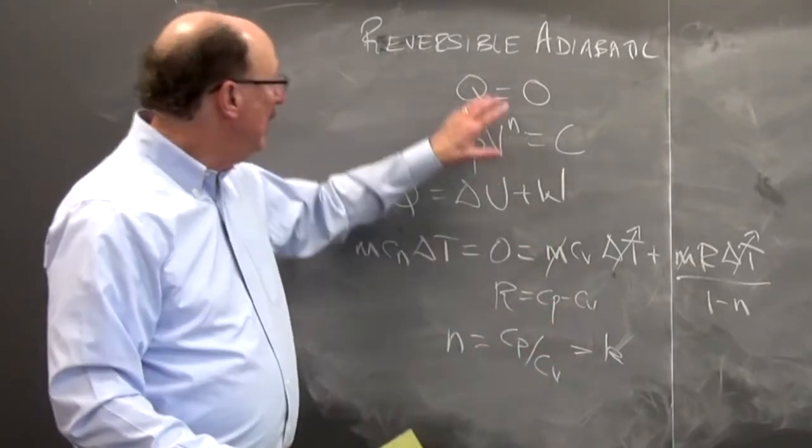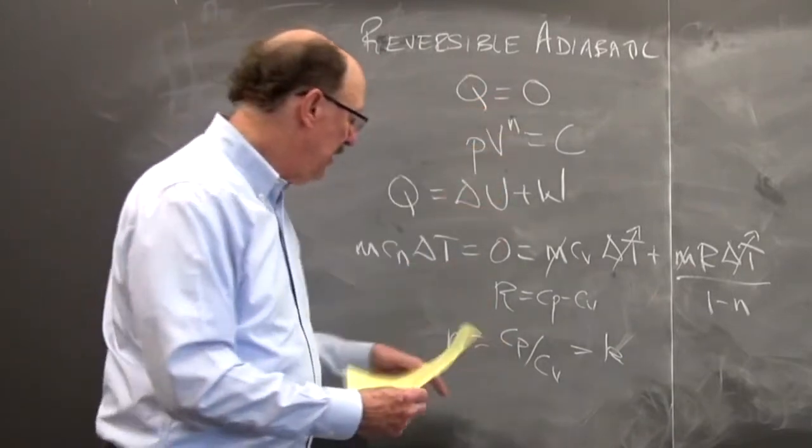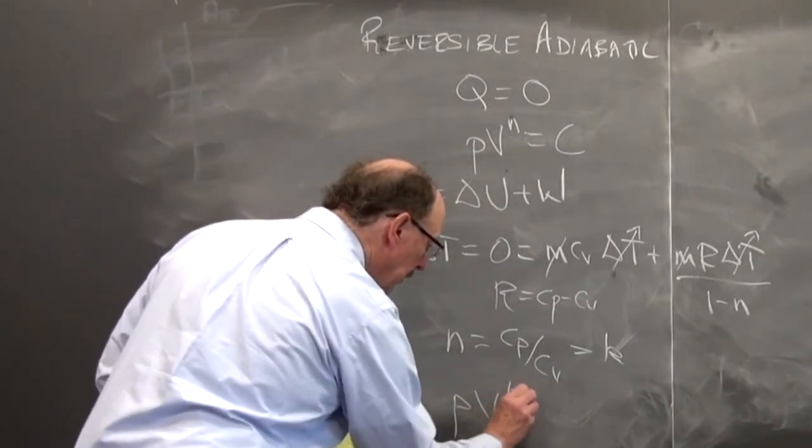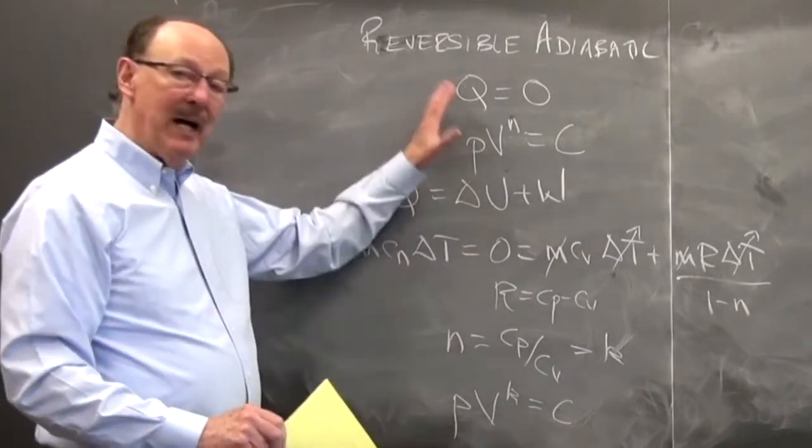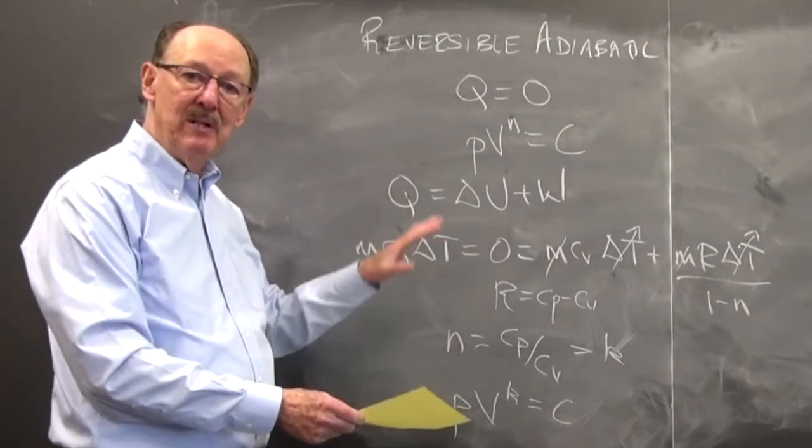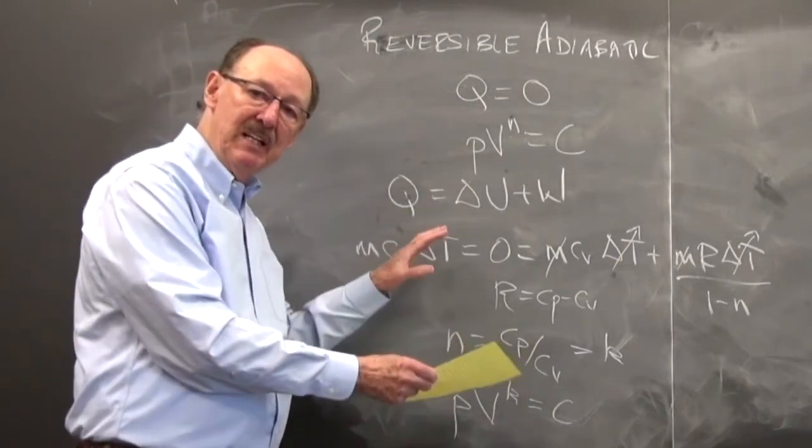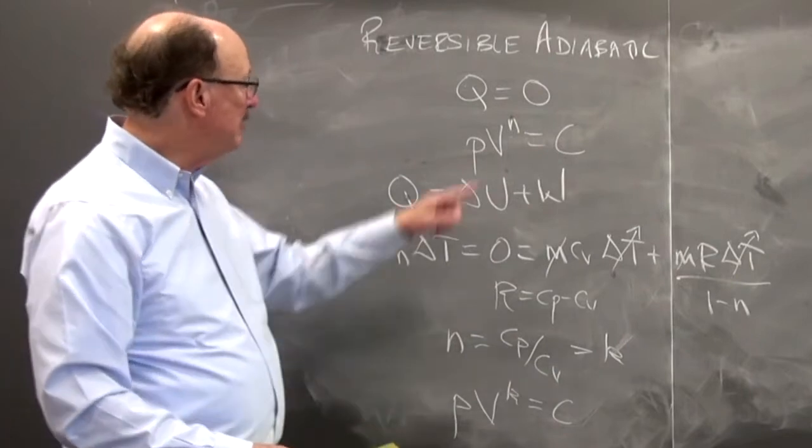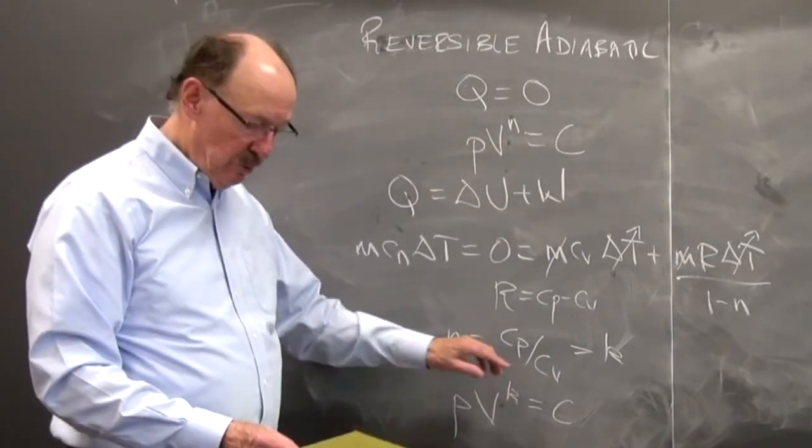And so now for reversible adiabatic process we have that PV to the K is equal to a constant. So I can apply all the equations I have for the polytropic process to the reversible adiabatic process and when it tells you N is equal to K, you can look it up in table A1. You know where to find it.